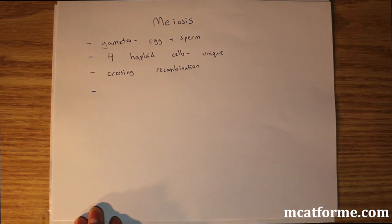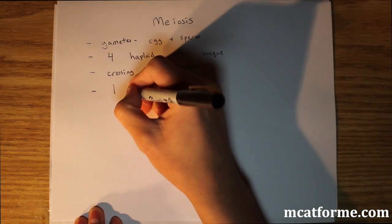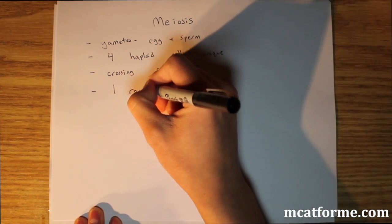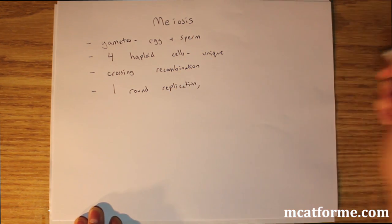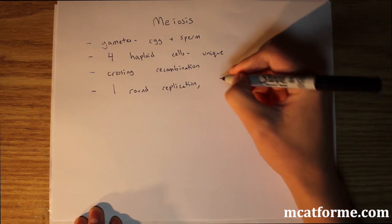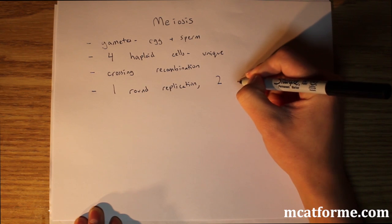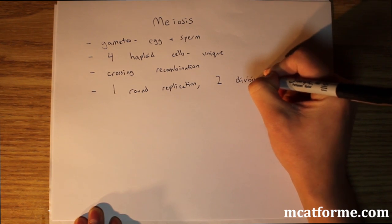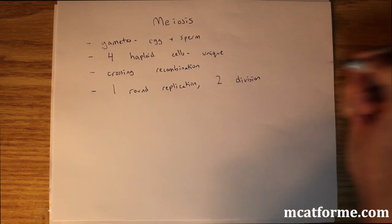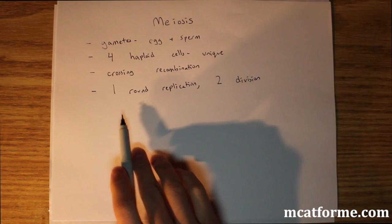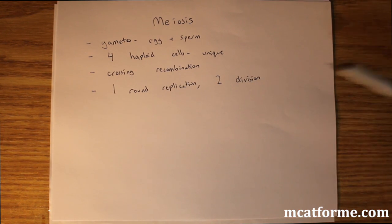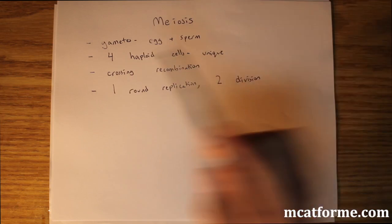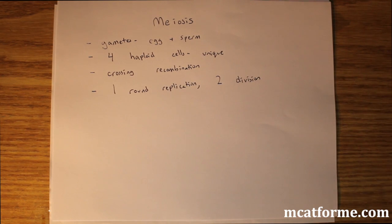Another thing to remember is that there's one round of DNA replication, which is the same as in mitosis, but the difference is that there are two cell divisions. In mitosis we had one round of replication and one round of division, which gave us two identical cells. In meiosis we get four haploid cells.